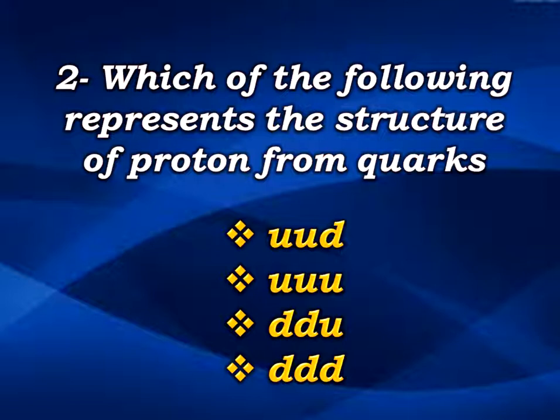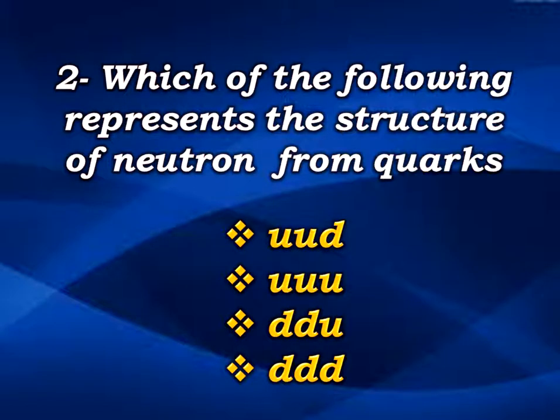Let's analyze each option. 'uuu' means three up quarks. 'ddu' means down, down, up. 'ddd' means three down quarks. For the proton, the correct answer is 'uud' — meaning up, up, and down quark.